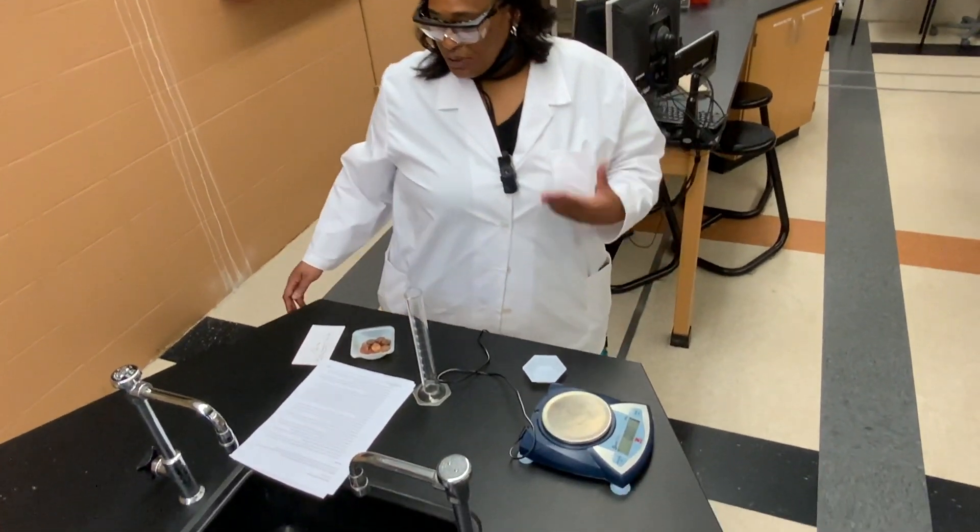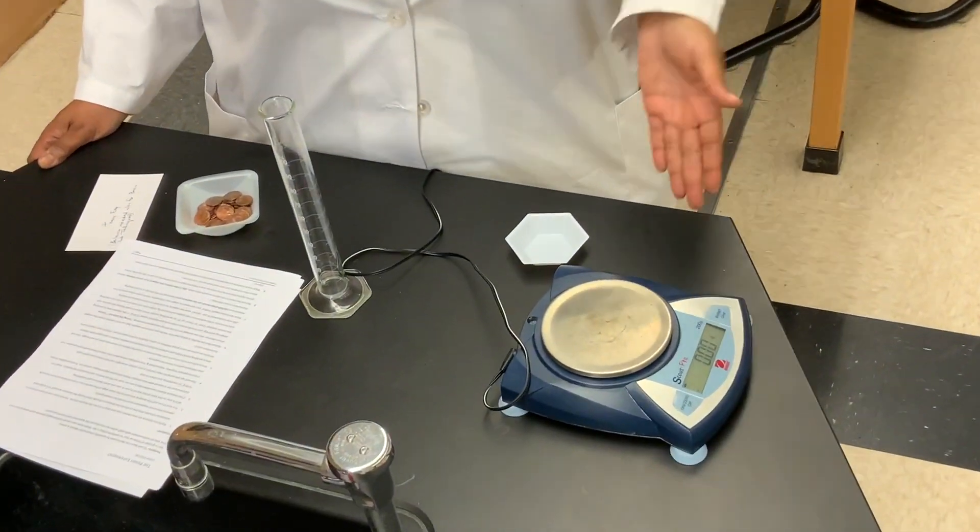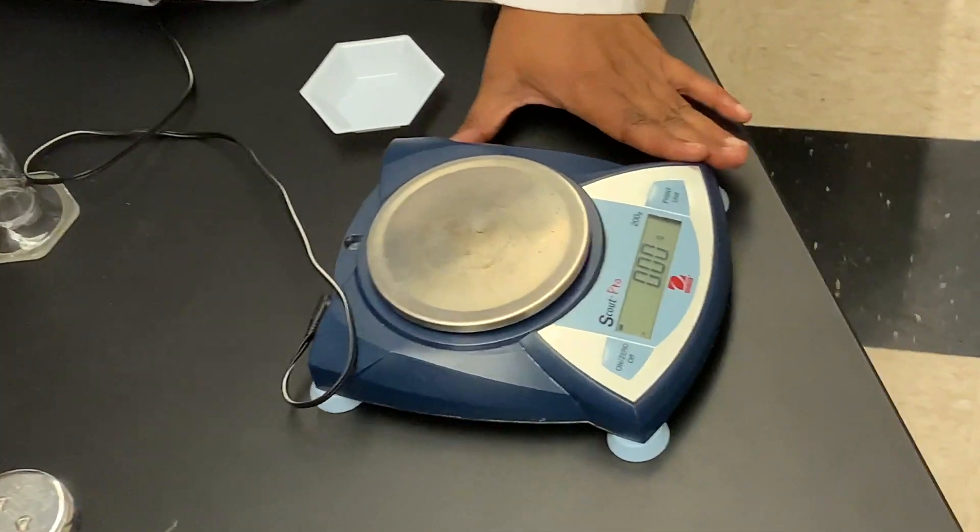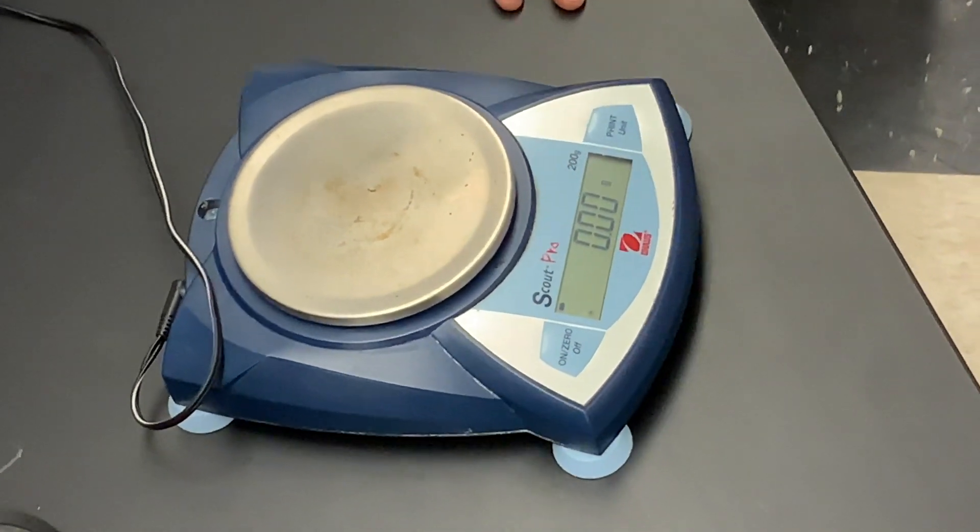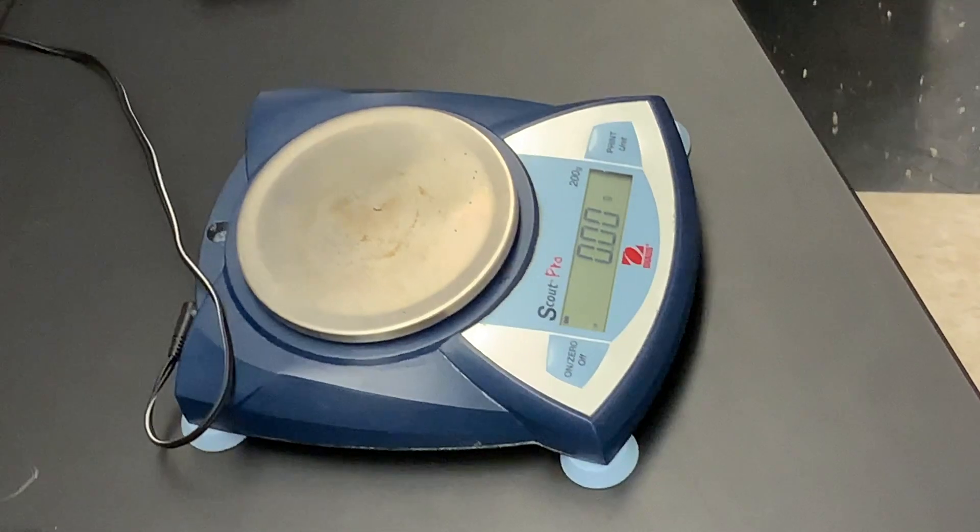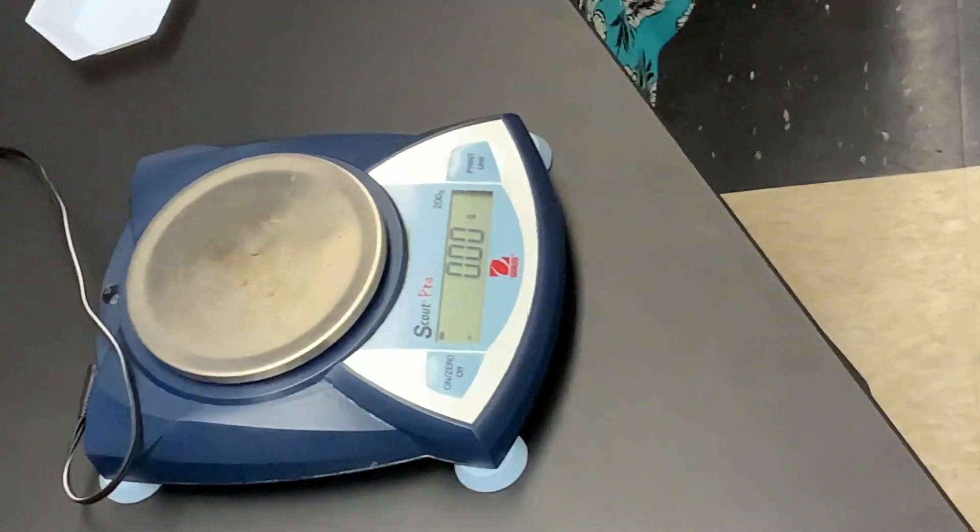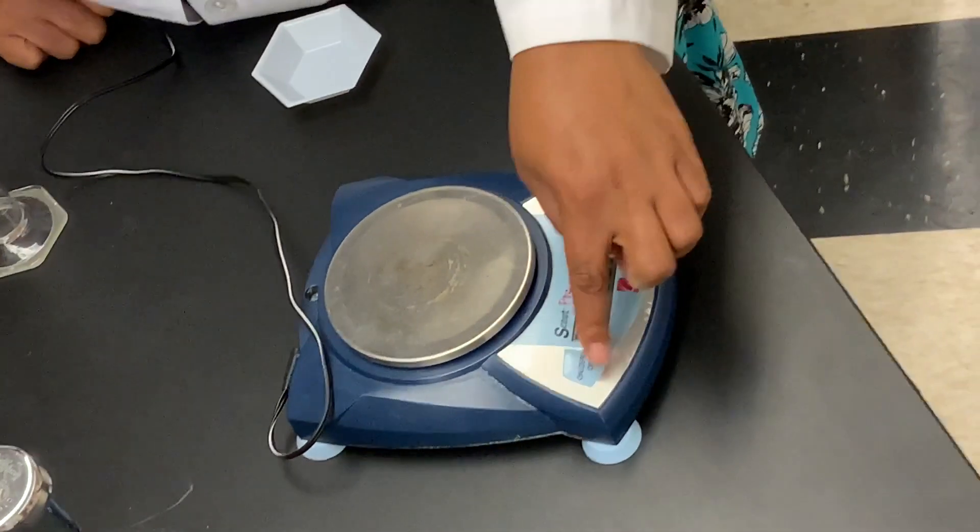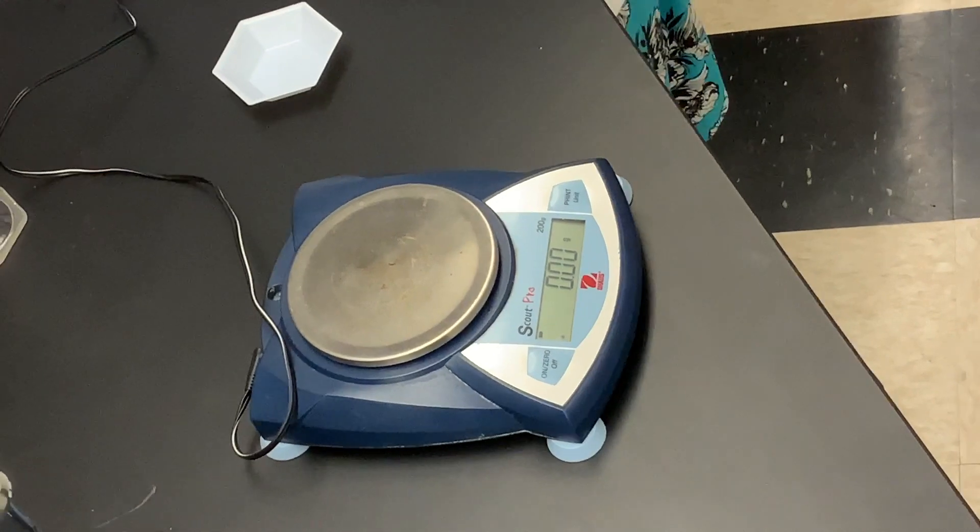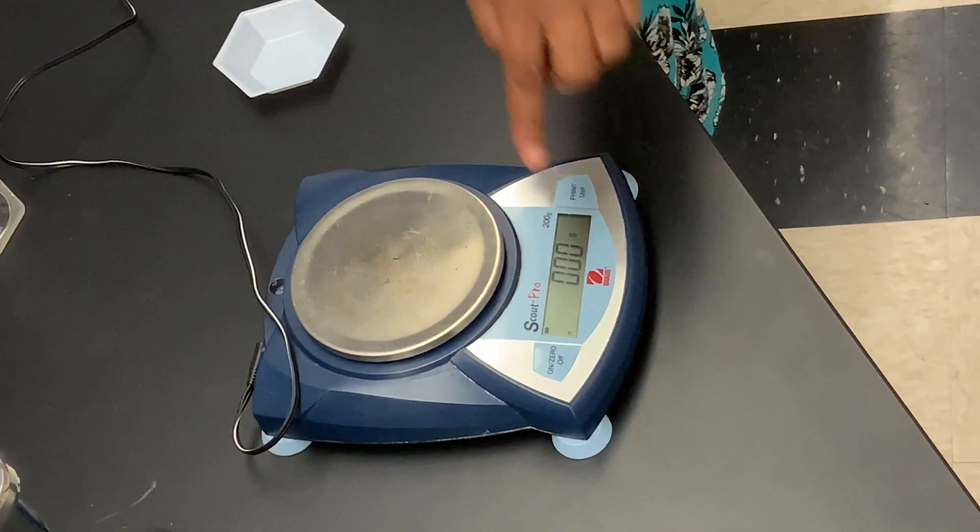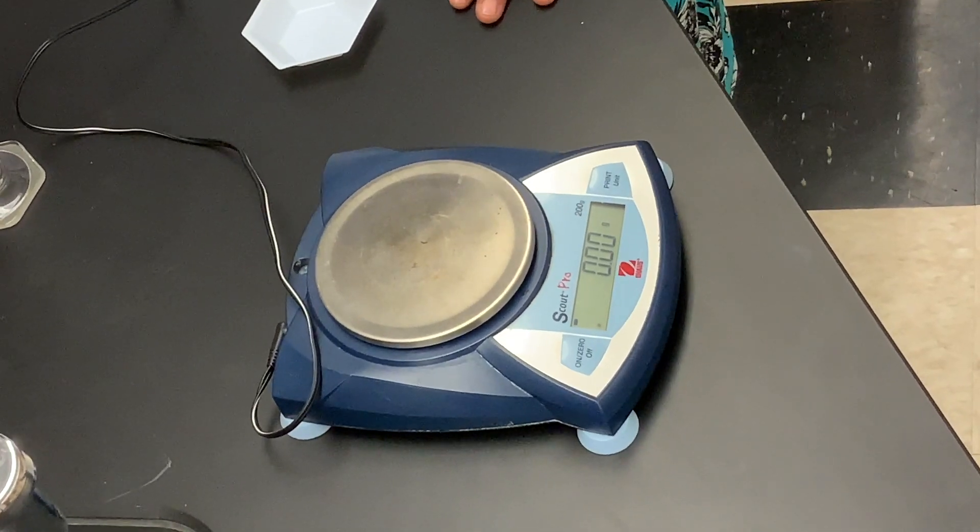To determine the mass of a penny, we have to use a balance. Here's our balance, and we see that the balance is already turned on. You always plug your balance into an electrical outlet, then turn on the power button by pressing on, and you'll see the zeros come across the digital display on the balance.